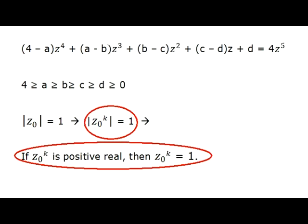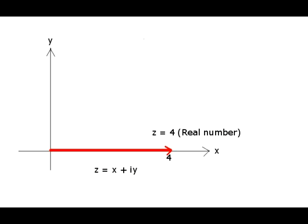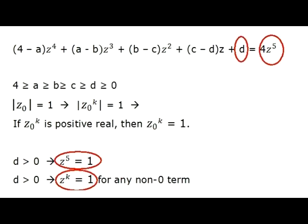Let's make one more observation that is quite trivial but important for us. Since each power of z₀ has magnitude equal to 1, then in the case when this power is a positive real number, this number is simply equal to 1. As we have shown earlier, if we assume that the freestanding coefficient d is not 0, then the term on the right side and any non-zero term on the left side are positive real numbers, since they are parallel to d. From that, we can conclude that the powers of z in all the non-zero terms are equal to 1 for any complex number z whose magnitude is equal to 1.